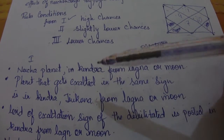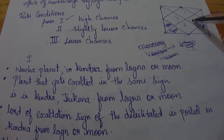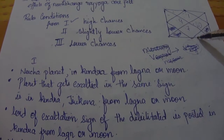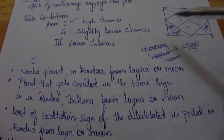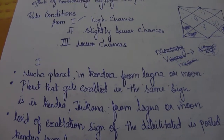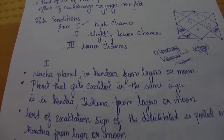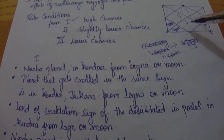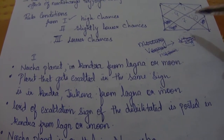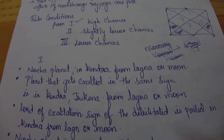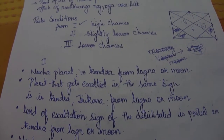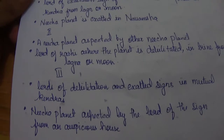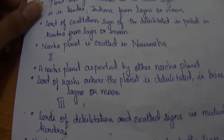So the Neecha planet being present in house number 1, 4, 7, or 10 with respect to Lagna or Moon is the key idea. You can also count from Moon — if Moon is placed somewhere, count 1, 2, 3, 4 or up to 7 or 10 from it. Additionally, if the Neecha planet is exalted in the Navamsha chart, Venus will not lose its power and will give good results. There are many such rules and different rules give different results.